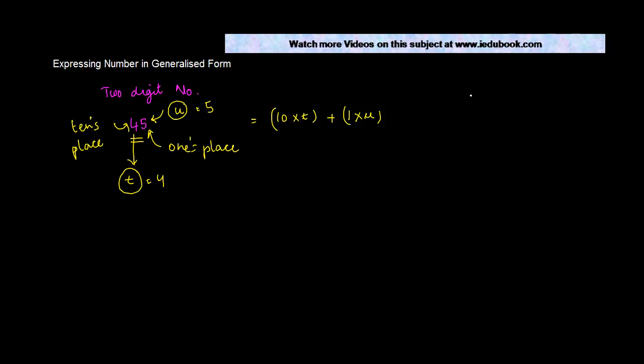So let's say instead of this you would have had 63. 63 can always be written as 10, in 63 what is the value of 10's? It's 6, at units you have 3. So 63 can be written as 10 into t, what's the value of t which we have? t is equal to 6 in this case, plus 1 into 3 or 1 into u. If you actually take the value of this, 10 into 6 is going to be 60, plus 1 into 3 is 3, 63.